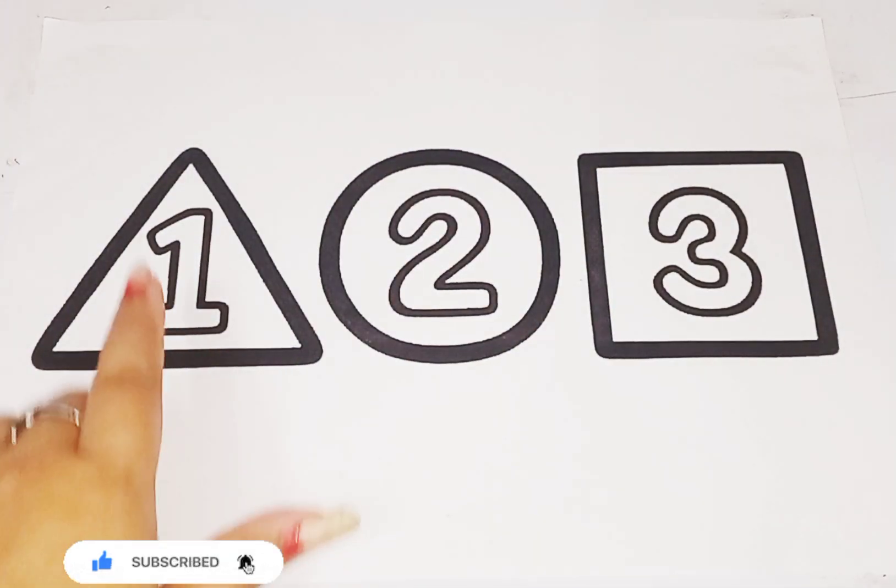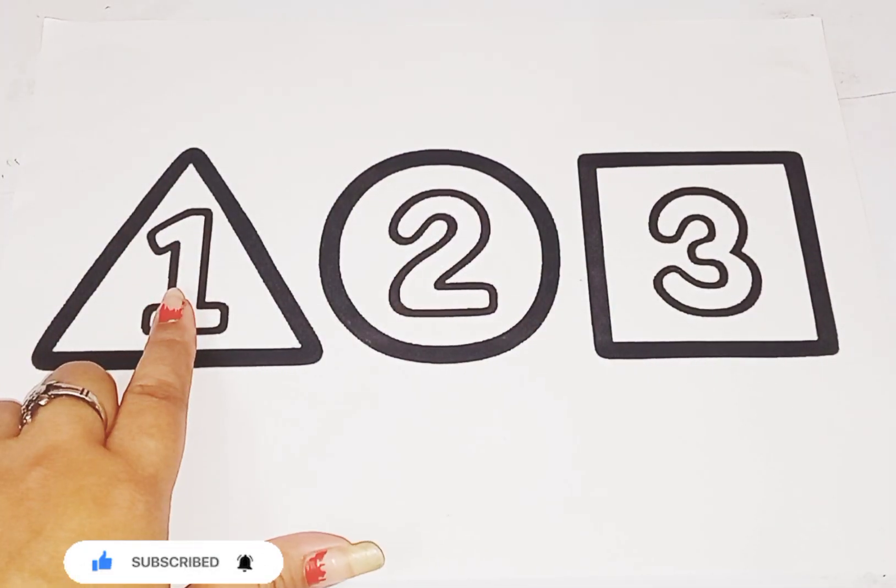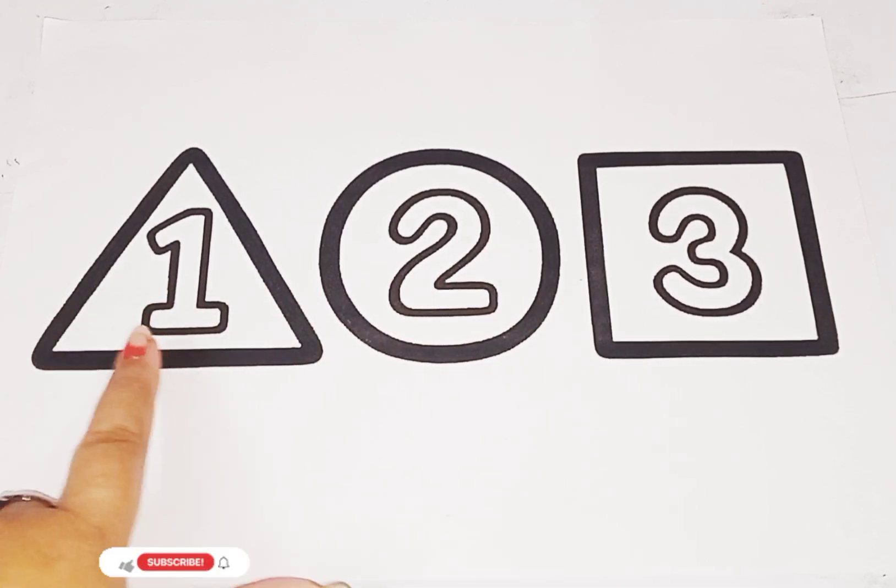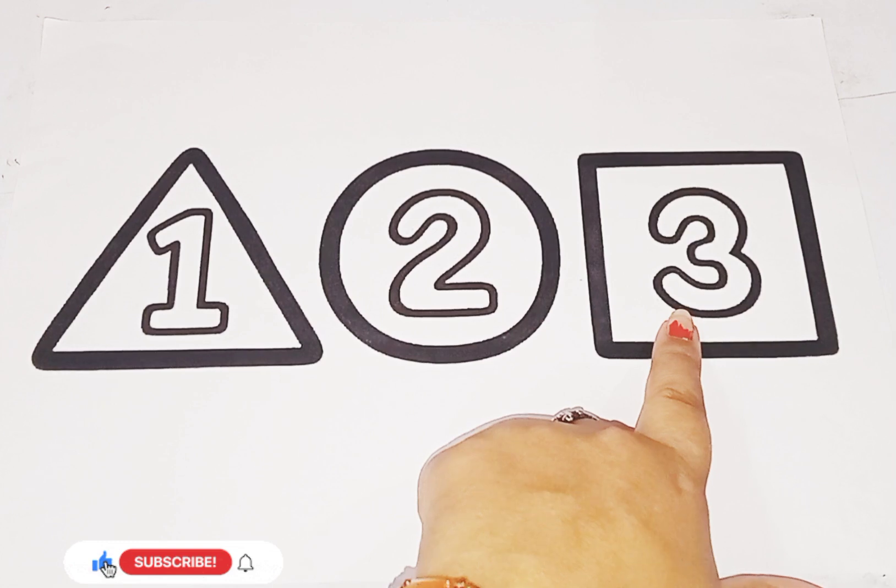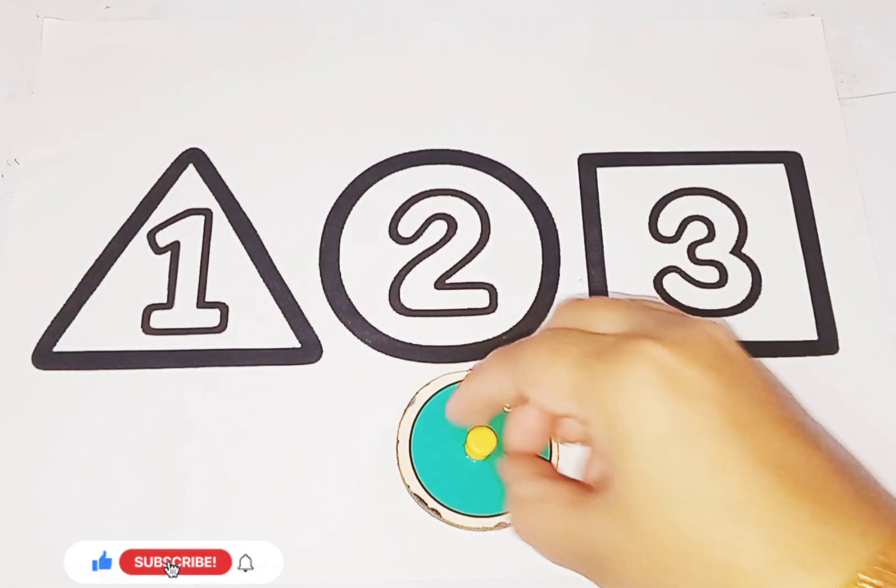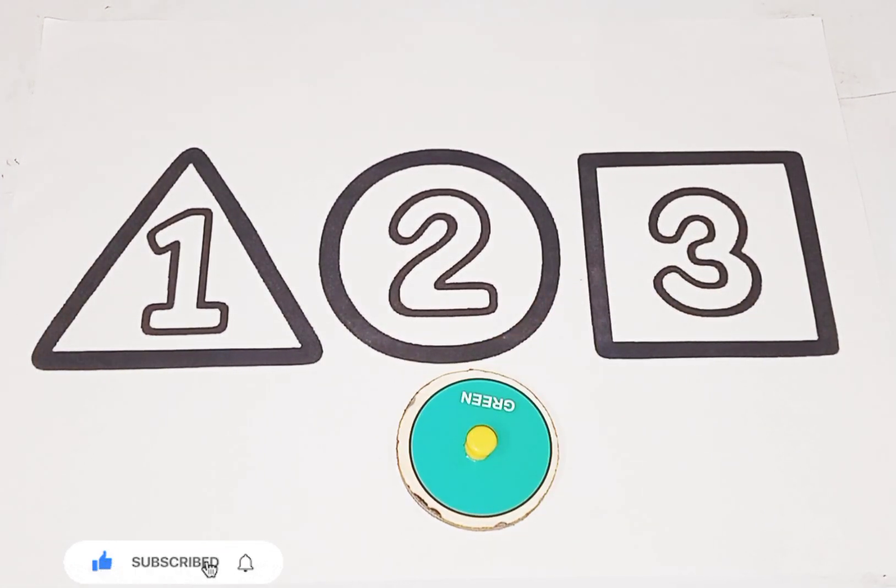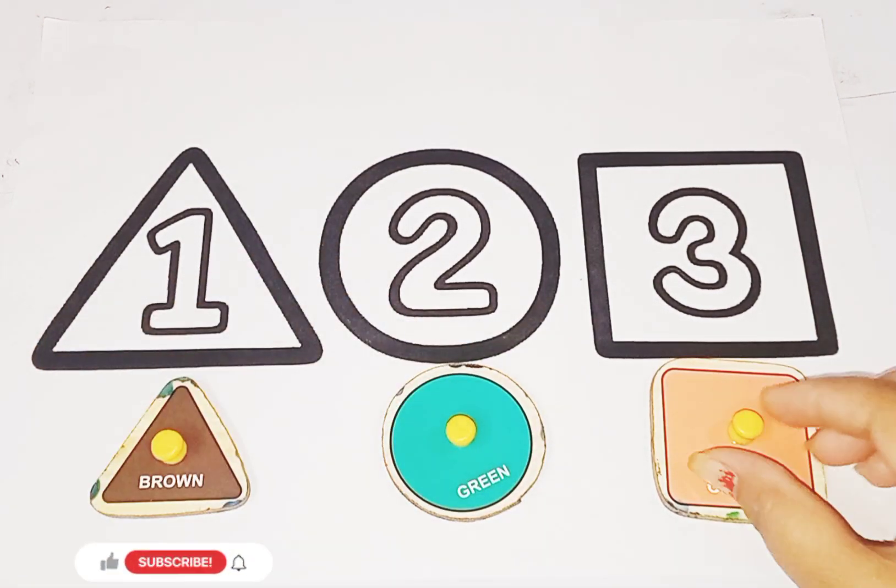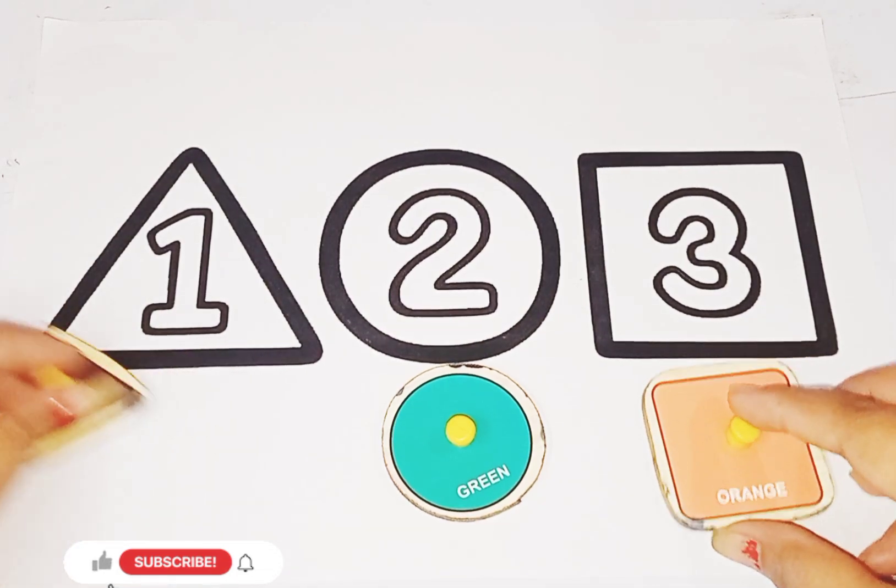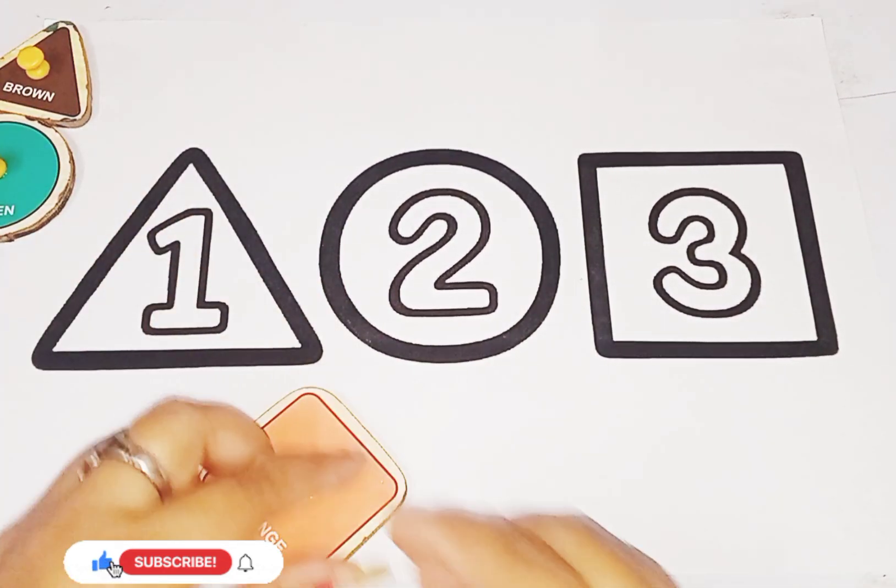So kids, today we learn shapes and numbers. Here is shape: triangle, circle, square, circle, triangle, square. Here is triangle, here is circle, and here is square. So kids, now start the video.